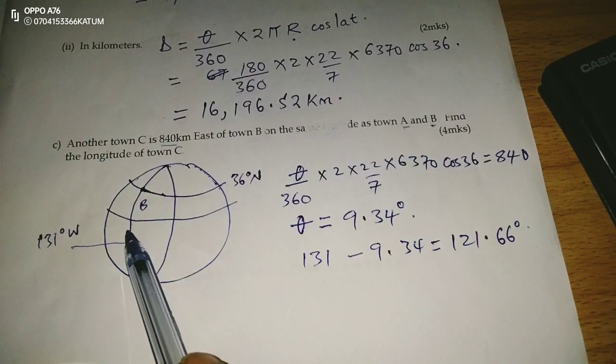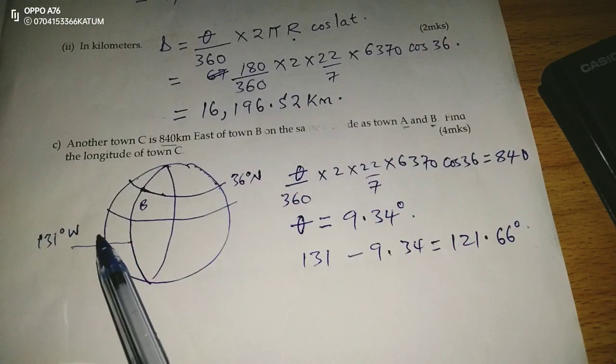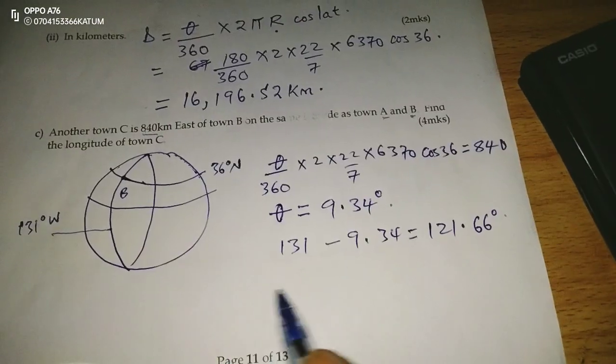and from 0, we have 131, it means we are still on the west side of the prime meridian. Therefore,